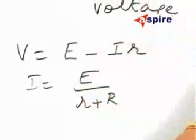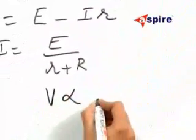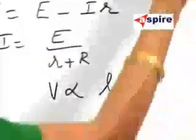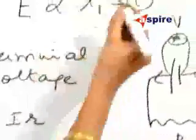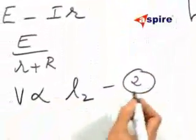And we are now balancing this EMF with the potentiometer and we are getting a balancing length L2. So from first equation E proportional to L1, second equation V proportional to L2.